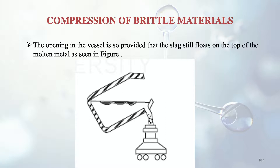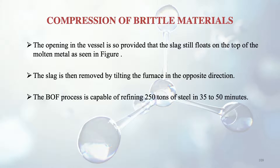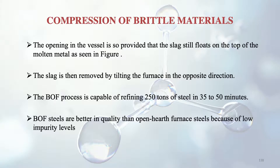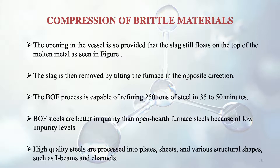The basic oxygen furnace process is capable of refining about 250 tons of steel in just 35 to 50 minutes. The quality is better than the open hearth furnace but not as high as the electric arc furnace, though it still has a low impurity level. High quality steels are processed into plates, sheets and various structural shapes such as I-beams and channels.